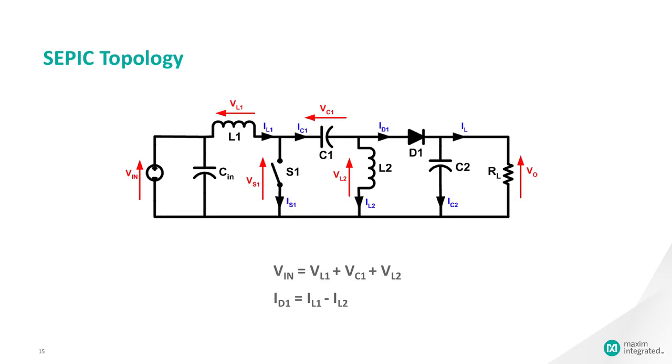During a SEPIC's steady-state operation, the average voltage across capacitor C1, noted here as VC1, is equal to the input voltage VIN. Because capacitor C1 blocks direct current, the average current through IC1 is 0, making inductor L2 the only source of DC load current.